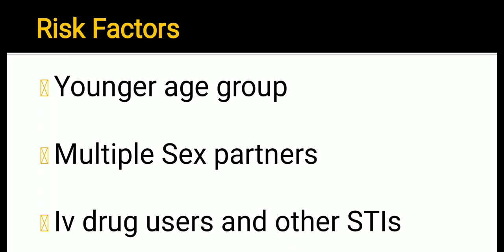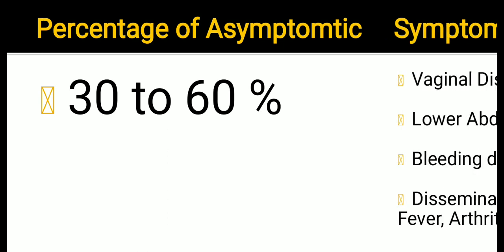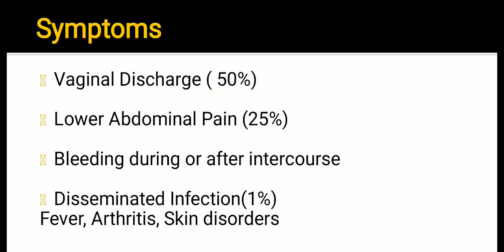30 to 60 percent of women with gonorrhea are asymptomatic. Symptoms include vaginal discharge in 50 percent of cases, lower abdominal pain in 25 percent of cases, bleeding during or after intercourse, disseminated infection in 1 percent of cases, and fever, arthritis, and skin disorders.